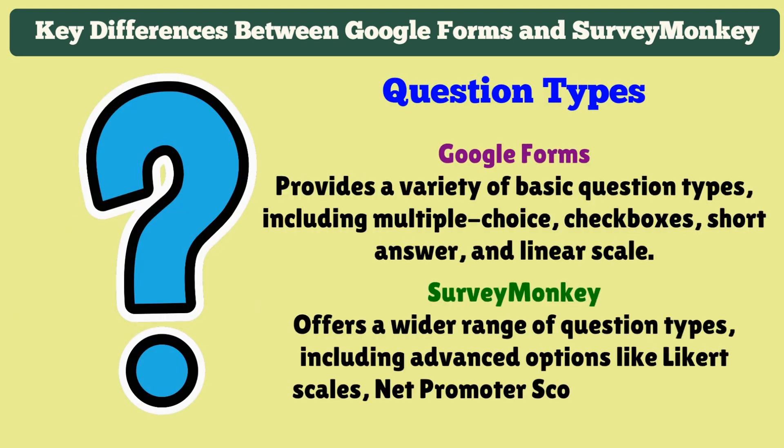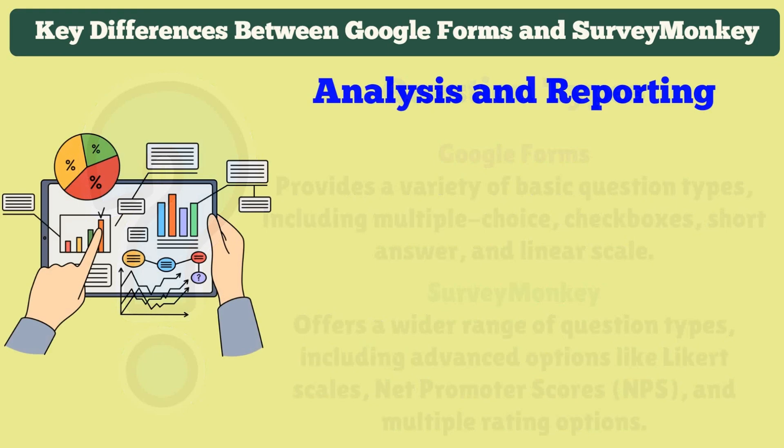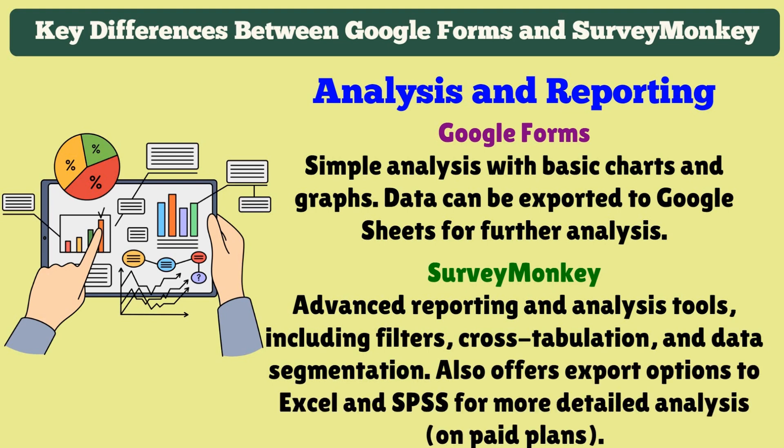Question types: Google Forms provides a variety of basic question types including multiple choice, checkboxes, short answer, and linear scale. SurveyMonkey offers a wider range, including advanced options like Likert scales, Net Promoter Scores (NPS), and multiple rating options. Analysis and Reporting: Google Forms has simple analysis with basic charts and graphs, and data can be exported to Google Sheets for further analysis. SurveyMonkey has advanced reporting and analysis tools including filters, cross-tabulation, and data segmentation, with export options to Excel and SPSS for more detailed analysis, but on paid plans.